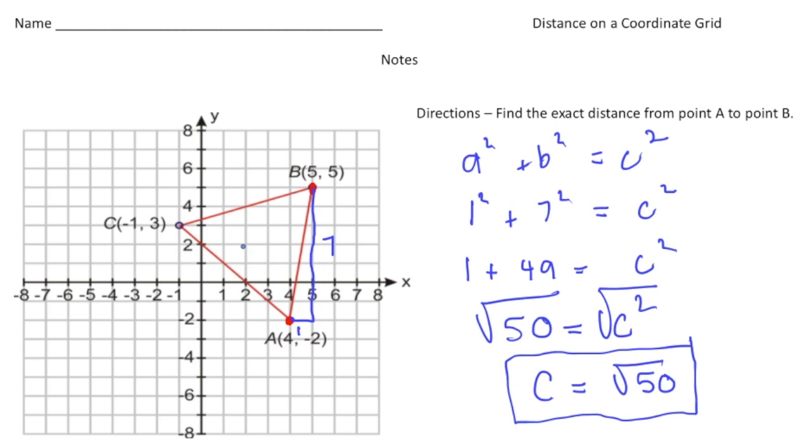So again, to find the distance on a coordinate grid, what you have to do is if this line is going to be the hypotenuse of a triangle, you have to draw on the other legs and then use the Pythagorean theorem to figure out that distance. So why don't you pause the video and try the Your Turn problem now. And when you're done, hit play. You can see how you did. Alright, good luck.